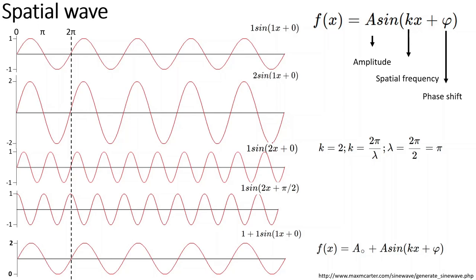From the equation: if k equals 2 and k is defined as 2π over lambda, we can solve for lambda and find that the wavelength of the k=2 wave is π. You can see the first wavelength crossing at π and another wavelength starting in the range zero to 2π. If we increase to k=4, the first wavelength would cross at π/2, meaning the wave oscillates much faster.